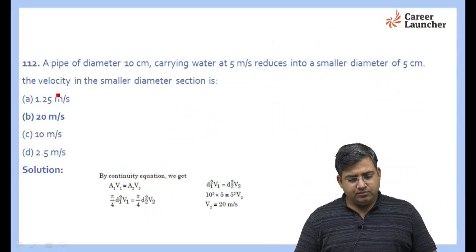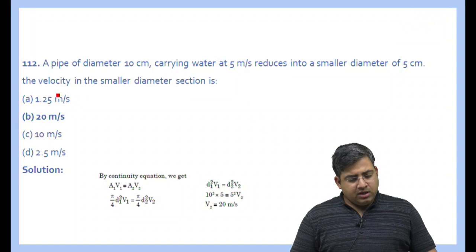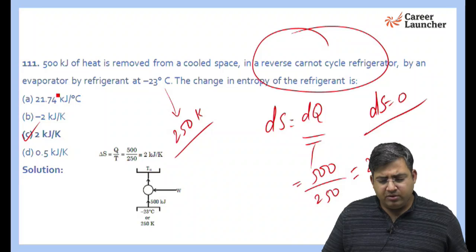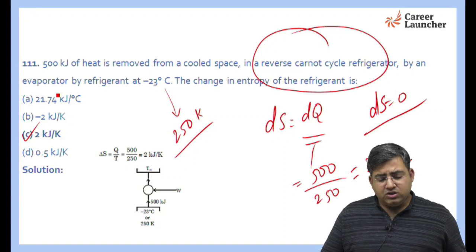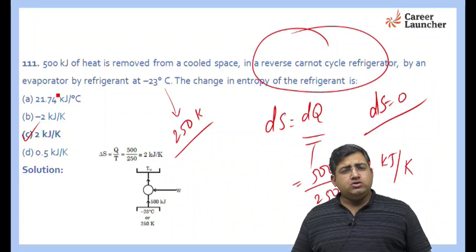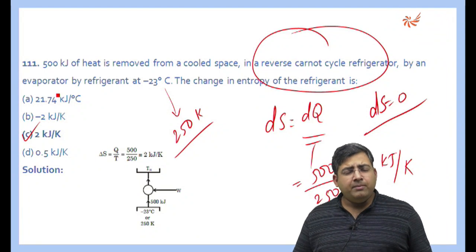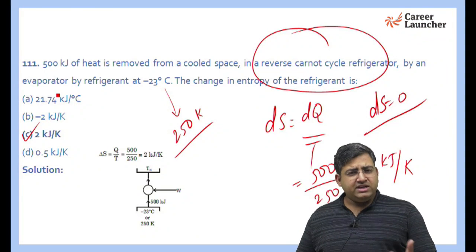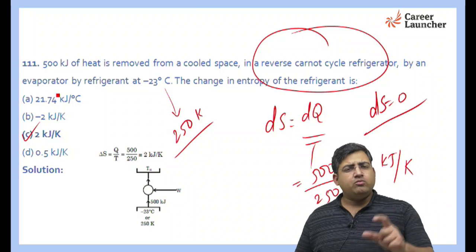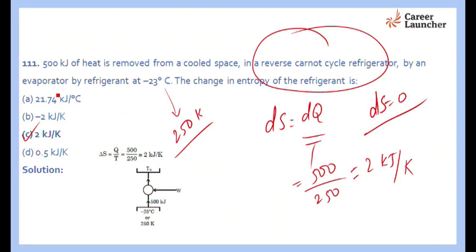To clarify: for the reservoir, the change in entropy is negative since heat is removed from it. But for the refrigerant, heat is being added to it, so the change in entropy is positive — giving us +2 kJ/K, not −2 kJ/K. Heat is being added to the refrigerant, so we take the positive value.